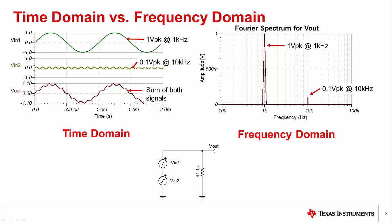Thus, the frequency domain has two components, at 1 kilohertz and 10 kilohertz, with amplitudes of 1 volt peak and 0.1 volt peak respectively. The key point here is that the frequency domain only displays the amplitude for sinusoidal waveforms. So how do non-sinusoidal waveforms show up in the frequency domain? We will see how all waveforms can be represented as a sum of sinusoidal waveforms.